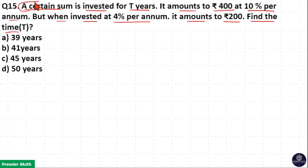Here, certain sum means this is the principal. So this principal is invested for T years. Now, the same amount of sum is invested for the same years but at different rates of interest, that is at 10% and at 4%.